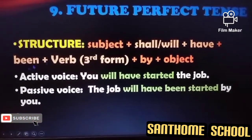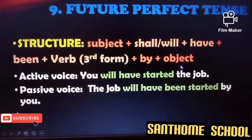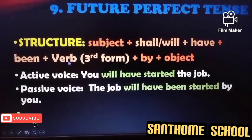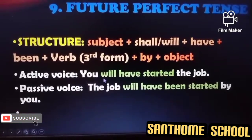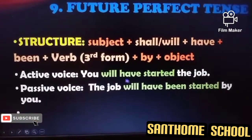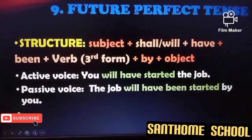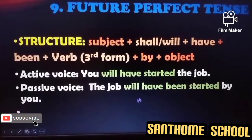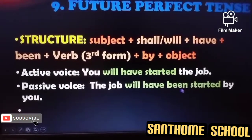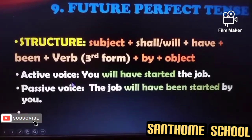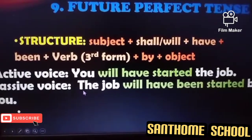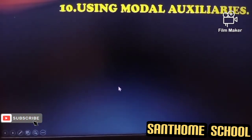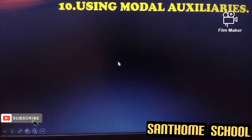In future perfect tense, the structure says we use 'shall' or 'will' plus 'have' plus 'been' plus the third form of the verb. Take a look at the example. Active voice: 'You will have started the job.' This shows future perfect tense. In passive voice: 'The job will have been started by you' — 'will have been started.' Keep in mind: 'been' is used for all perfect tenses with slight changes according to present, past, and future. These are the three perfect tenses we have studied.